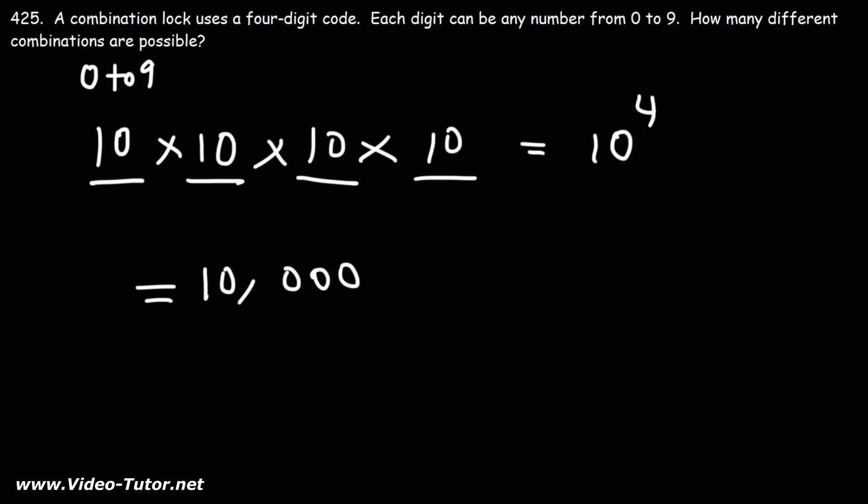So that's how many combinations are possible for a four-digit lock when you could choose any number between 0 to 9. There's 10,000 different combinations that are possible.